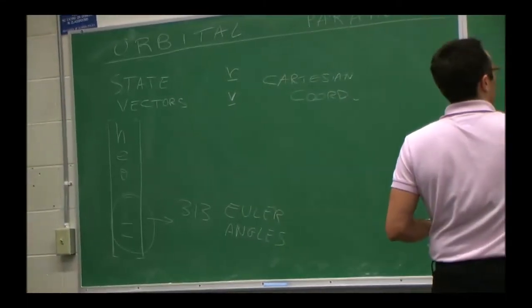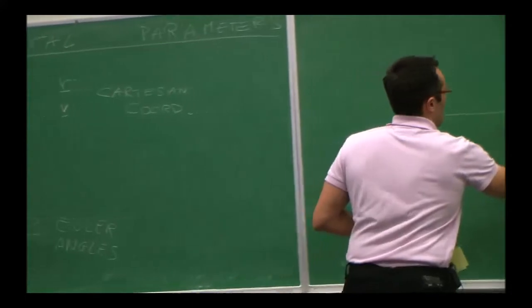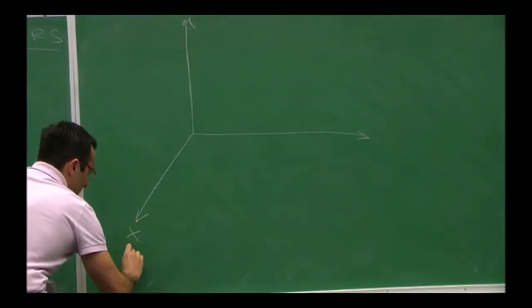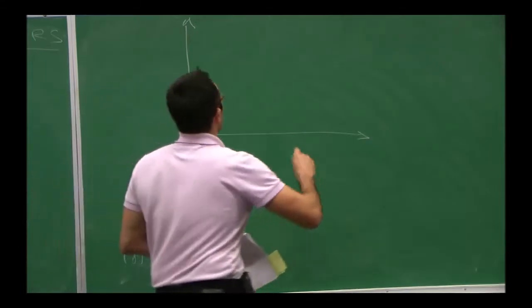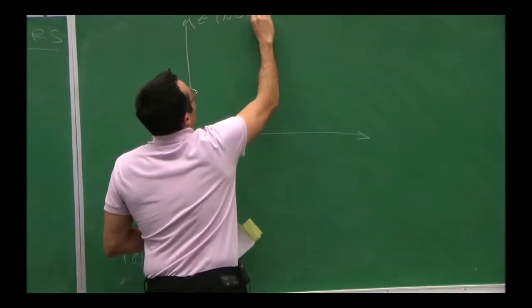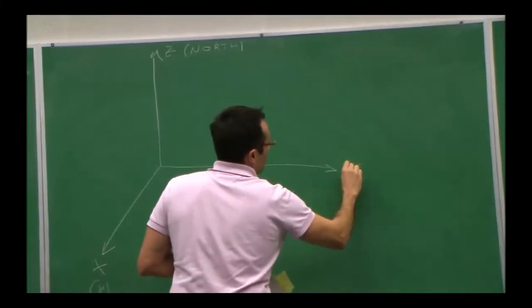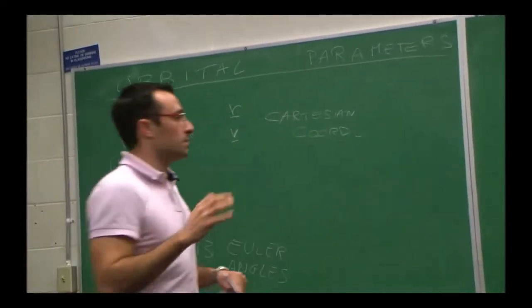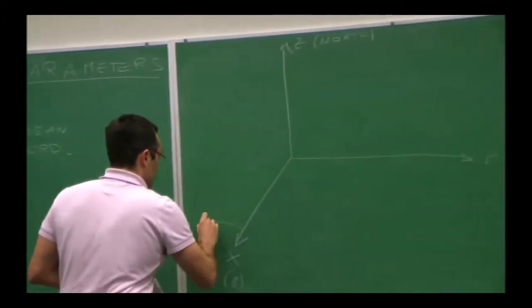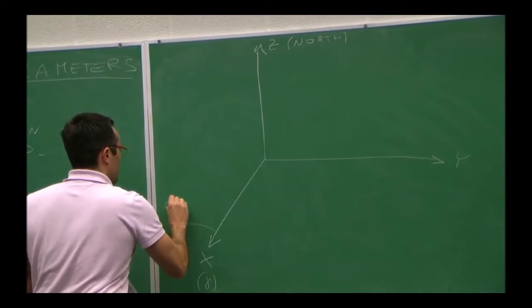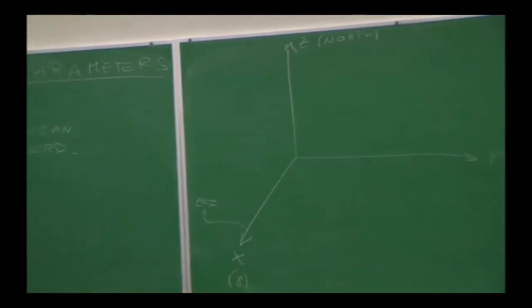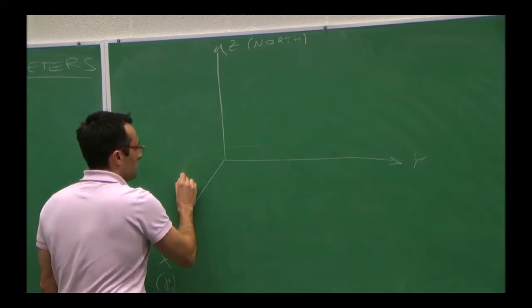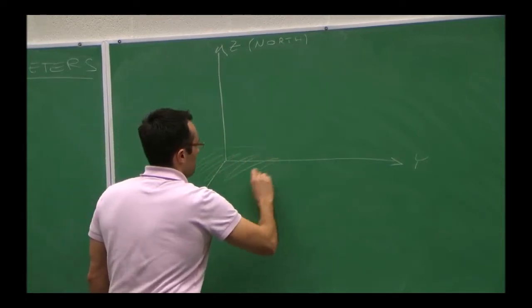In terms of orbital parameters, we start from our ECI fixed coordinate system, where the x-axis points at the Pisces constellation and the z-axis is the north pole of the planet. The y and x axes define the equatorial plane. This does not rotate with the planet — the center is the center of the planet, but the axes are inertially fixed, or at least pretty steady for a few years, as we discussed last time. This is the equatorial plane.